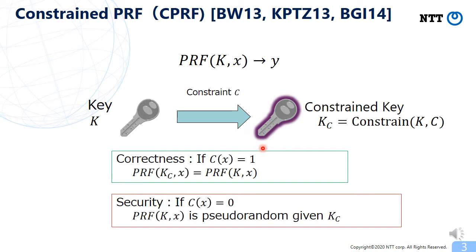Recently, there was proposed an extension of PRF called constrained PRF or CPRF. In CPRF, given the key K and the constraint C that defines a certain predicate, we can generate a constraint key denoted by K sub C. By using the constraint key, we can evaluate the PRF on any input x that satisfies the predicate. As a correctness requirement, for any input x such that C of x is equal to 0, the PRF value looks random even if we are given the constraint key K sub C.